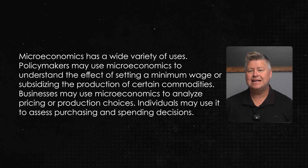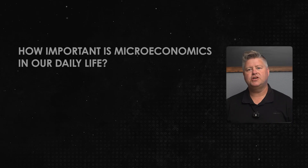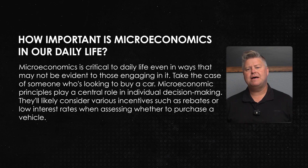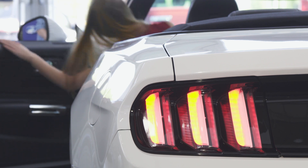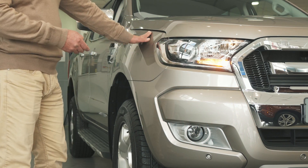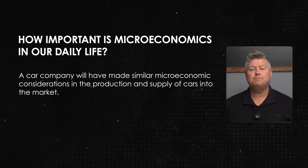Businesses may use microeconomics to analyze pricing or production choices. Individuals might use it to assess purchasing and spending decisions — think about if you're a purchase manager for a large corporation trying to analyze if people are going to buy your product or how much product you should have on hand to deal with demand. Microeconomics is critical to daily life, even in ways that may not be evident. Take the case of someone looking to buy a car. They'll likely consider various incentives such as rebates or low interest rates, and select a model based on maximizing utility while staying within their income constraints. A car company will have made similar microeconomic considerations in the production and supply of cars into the market.